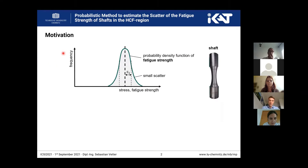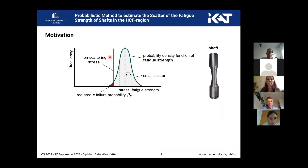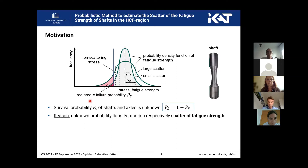The motivation is that the fatigue strength is scattering, and so we have a probability density function. You can see here the standard deviation and the mean value. On the right side you can see, for example, one shaft. We have a non-scattering stress, and so we can calculate the probability of failure if we determine the red area. With this red area and the failure probability we can also determine the survival probability. And to determine the survival probability it is necessary to determine the scatter. If we increase the scatter, the red area also increases, and so the failure probability increases and the survival probability decreases. So we see that it is very important to know the scatter of the fatigue strength.